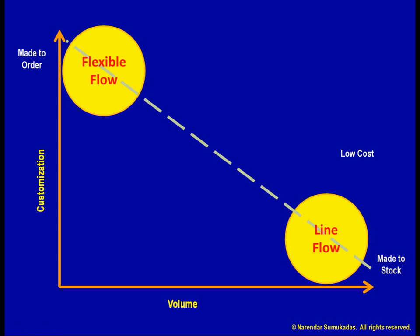Suppose instead I am focusing only on consistent quality and nothing else. Which end would I pick? Given that the word 'consistent' implies doing something over and over, line flow fits best. Consistent quality also means making fewer mistakes.